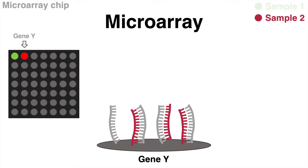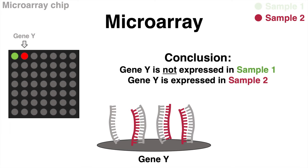In this case, the spot of gene Y appears red after scanning because of the specific fluorescent label. As a conclusion, gene Y is not expressed in sample 1 but in sample 2.